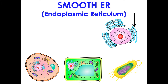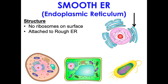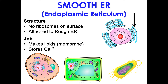The smooth ER is just outside of the rough ER and does not have ribosomes — that's what makes it smooth. It does many things, but two key functions: it makes lipids for the membrane, and it stores calcium, which is incredibly important for triggering a ton of cell responses. It can also chemically modify small molecules, and glycogen degradation happens here as well.